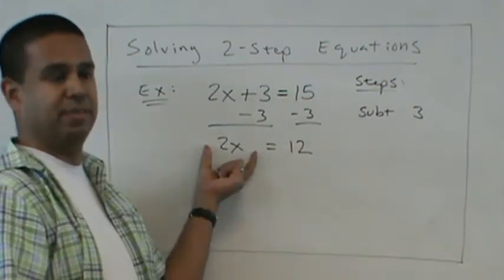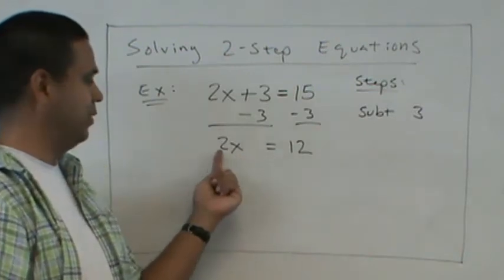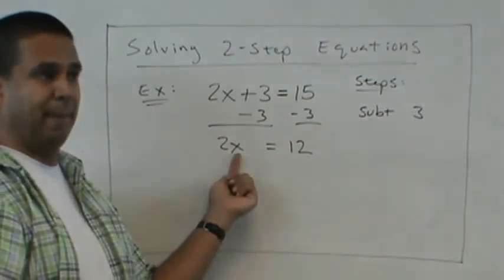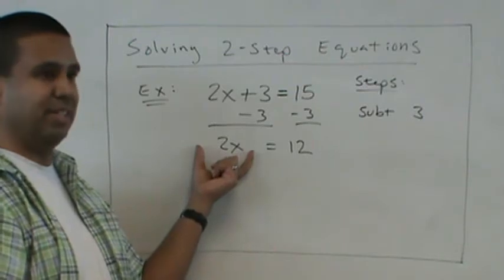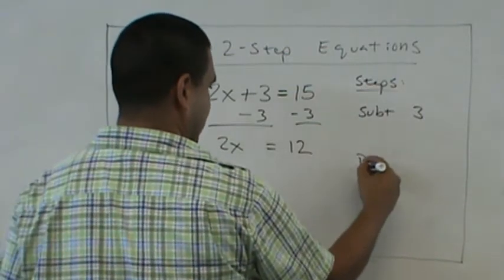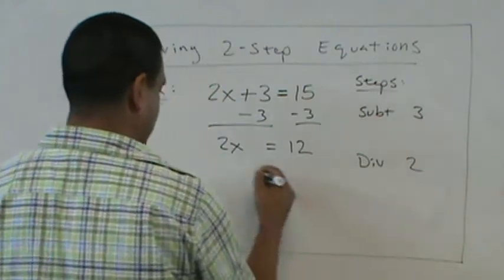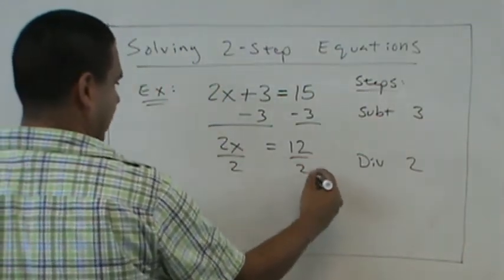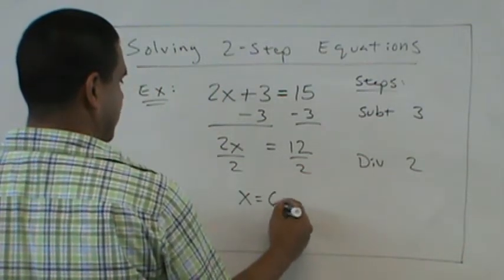Again, 2x means multiplication. So this is 2 times the number. What's the inverse of multiplication? Division. So then we divide by 2. So x would be 6.